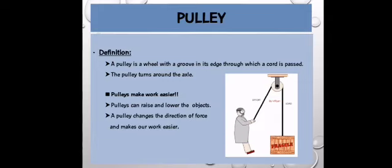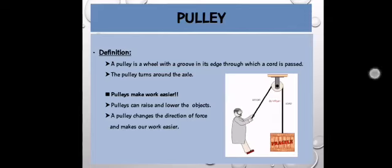Now as you can see in the diagram, a person is pulling a rope, so the direction of the force is downwards, while the box is pulled upwards. So the direction of the force is upward. So the direction of forces has been changed and it is used to make our work easier.